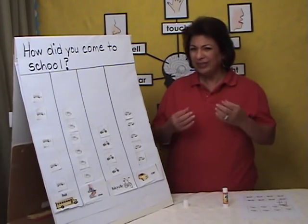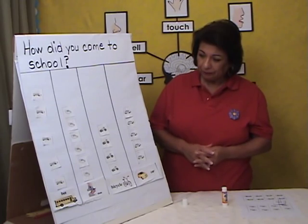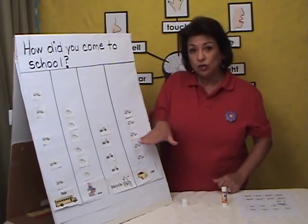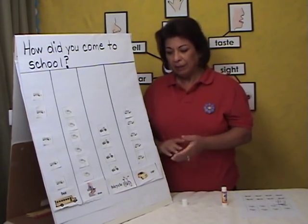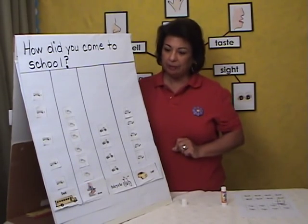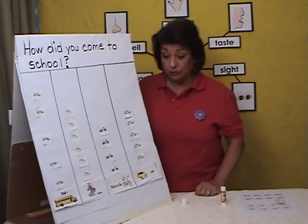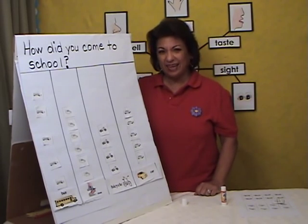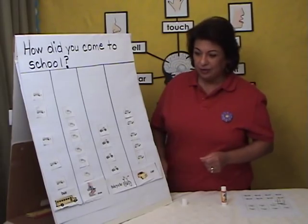Okay, even without counting, because they have that concept at this level. What about what's less? Mmm, bicycles. Why? Because it's shorter. Well, let's find out by looking at our graph: how many people came to school on the bus? How many students walked with their parents? How many students rode their bicycles? Or how many students came in a car? Let's count to find out which is less and which is more.